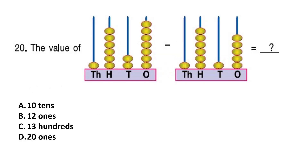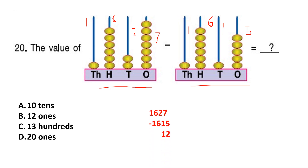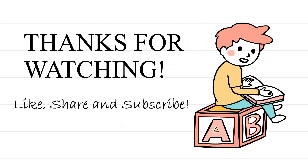Question number 20. The value of this abacus minus this abacus equals what? First abacus: 1000 place has 1, 100 place has 6, 10 place has 2, 1 place has 7 — the number is 1627. Second abacus: 100 place has 6, 10 place has 1, 1 place has 5 — the number is 1615. Subtracting 1627 minus 1615 equals 12. Answer is Option B — 12 ones.